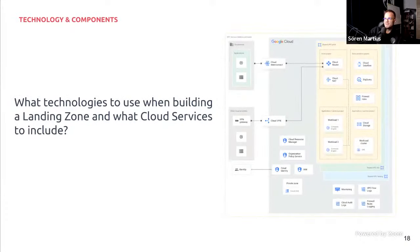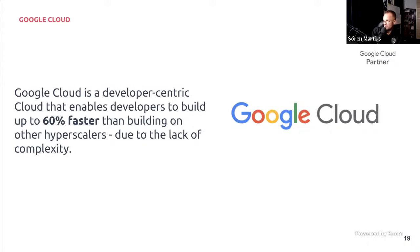What technologies should you use when building a landing zone and what cloud services to include? We will heavily focus on Google Cloud — not only because we are a Google Cloud partner, but because building on Google Cloud can be up to 60% faster due to the lower complexity overhead. It's a very developer-centric cloud: straightforward, great for containers and GKE. Of course, you may also end up in a multi-cloud environment.